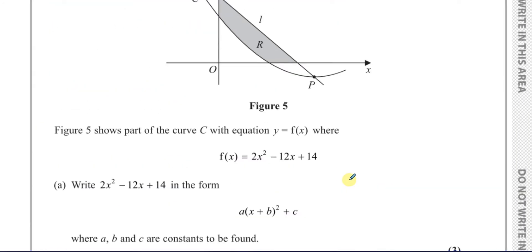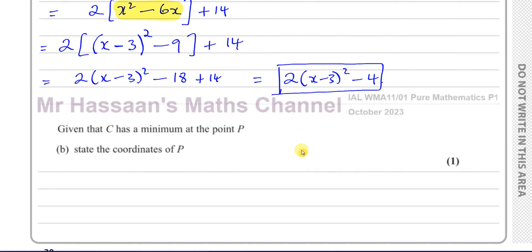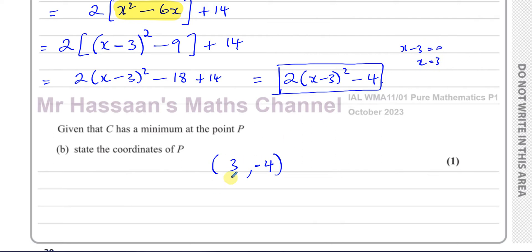For part b, it says: given that C has a minimum at point P, state the coordinates of P. We can see from the graph there's a minimum at point P. Since we've already completed the square, the minimum value is simply c, which is minus 4 — the value outside the bracket. The x-coordinate is whatever makes the bracket equal to zero, which is x = 3. So P has coordinates (3, minus 4).